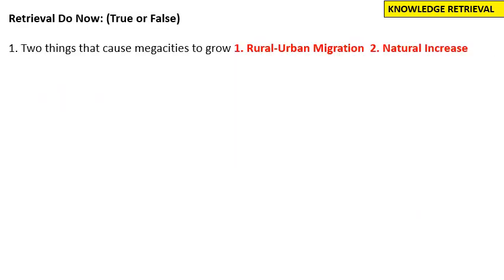Retrieval do now. Two things that cause megacities to grow. Last week we saw rural urban migration — that growth in number of people in the city because many people come from the countryside and migrate to the city. And the second reason was natural increase — the growth in population because birth rates are higher than death rates.